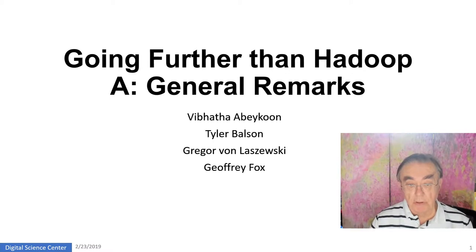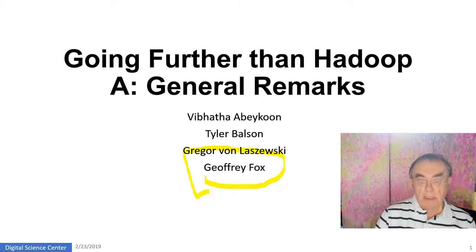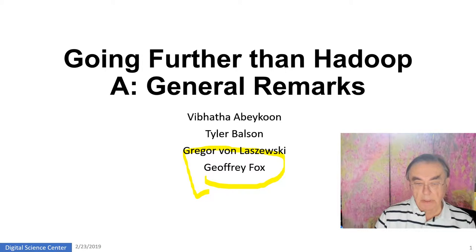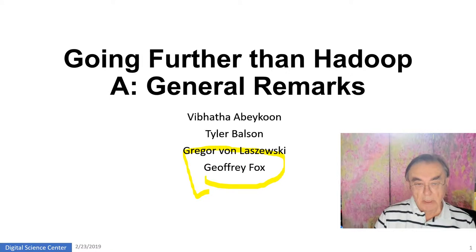Hello, this is Jeffrey Fox here, and we're doing some going further than Hadoop general remarks. Last year we did Spark and other detailed technologies, Kubernetes. This year we're doing something a little different. After finishing MapReduce and Hadoop, rather than doing all these detailed technologies, we're giving an overview of distributed systems which typically build on top of Hadoop. It covers Spark, Storm, Heron, and Twister 2.